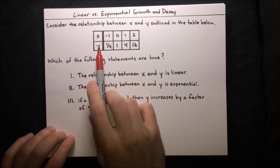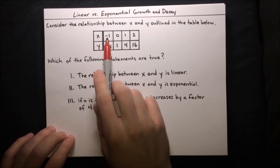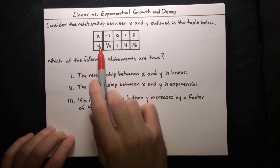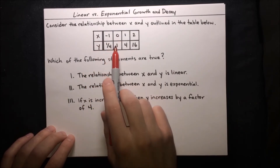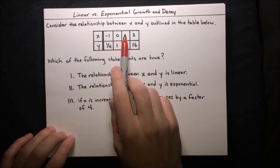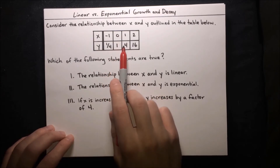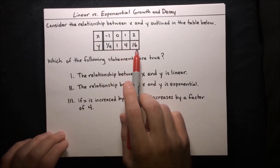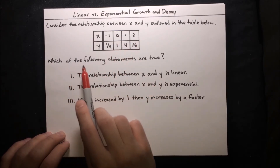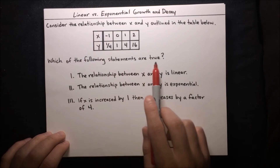We've got some ordered pairs here. When x is negative 1, y is one-fourth. When x is 0, y is 1. When x is 1, y is 4. When x is 2, y is 16. Which of the following statements are true?